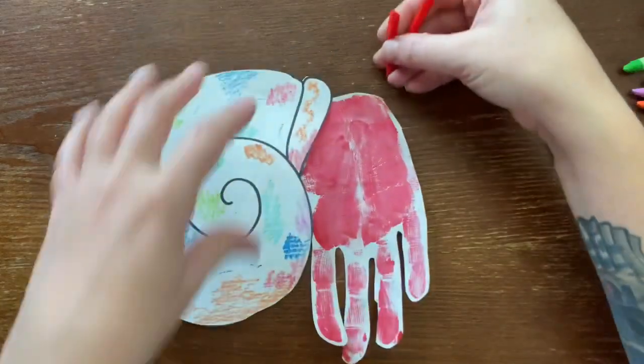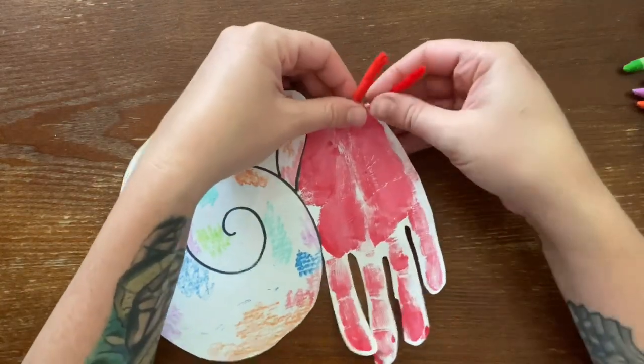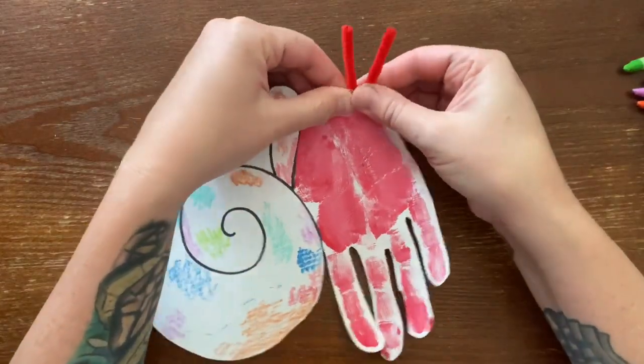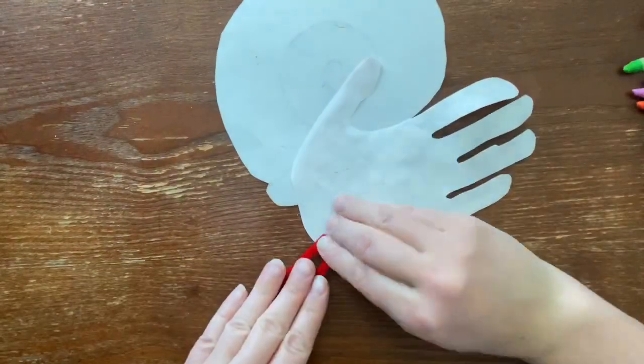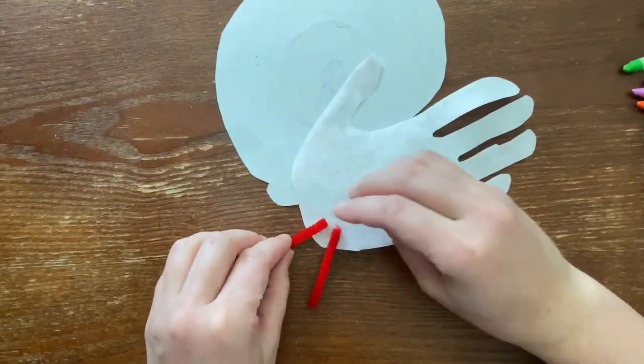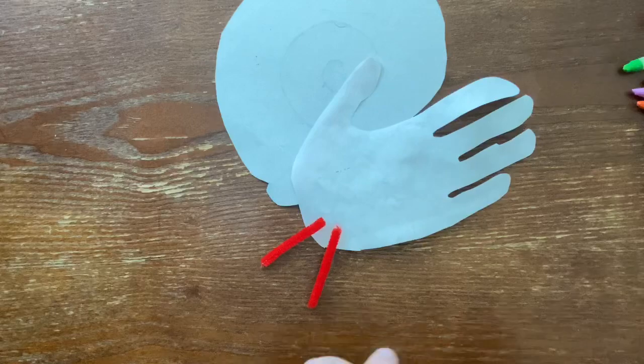Then you're going to adjust the eyes to where you want it. Once you find a spot that you like, you can either tape them or glue them. In this case I'll just tape them.